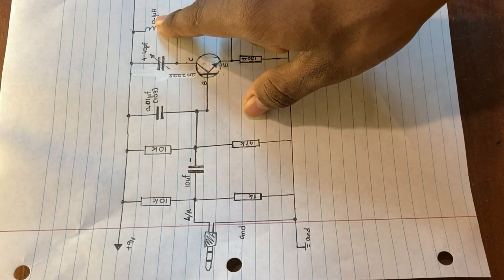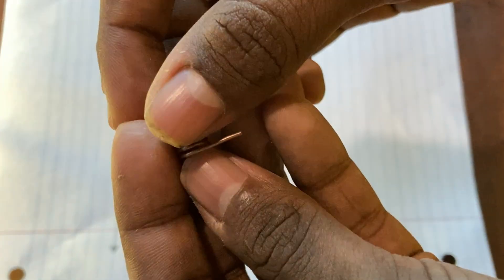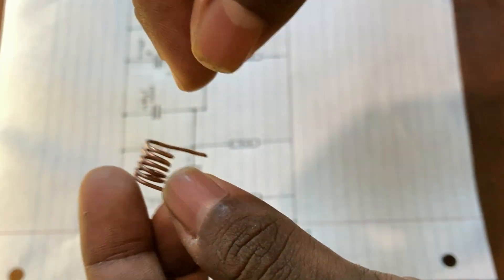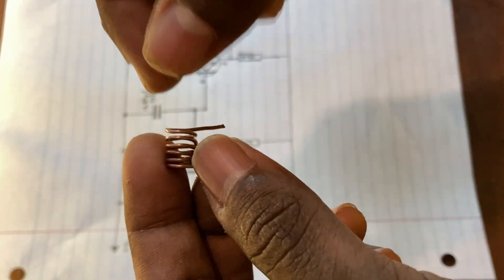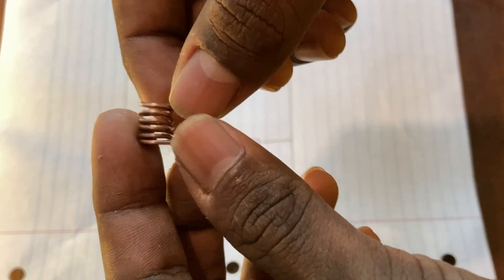A 0.1 micro Henry inductor. I am using this copper coil. You can wrap a copper wire around a pen or pencil, five turns, and there you have a coil.